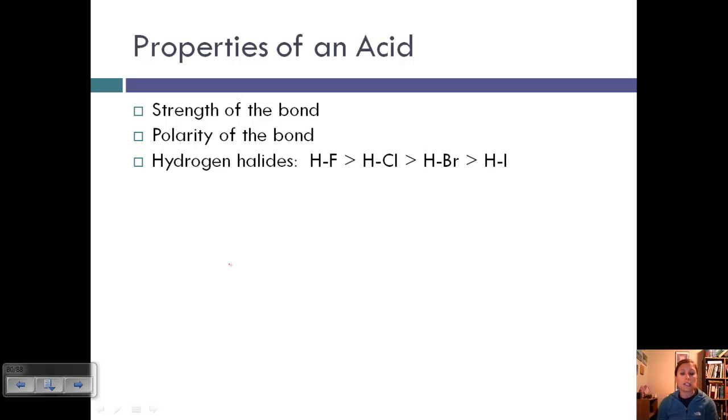For example, let's look at hydrogen halides. Remember the halogens are fluorine, chlorine, bromine, and iodine - group 7. So hydrogen halides are HF, HCl, HBr, and HI.